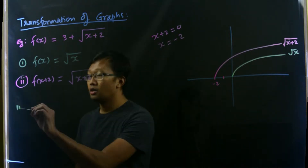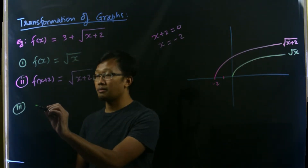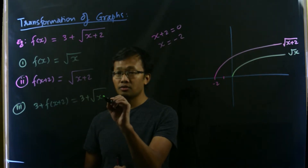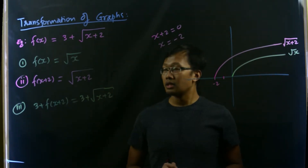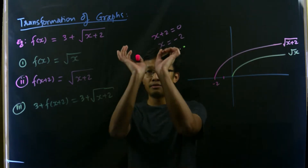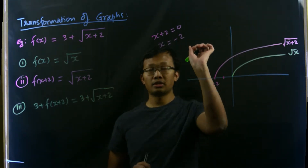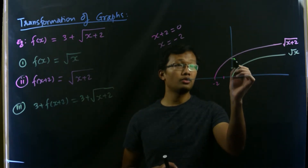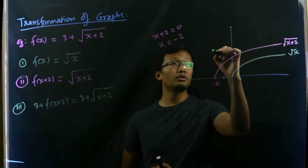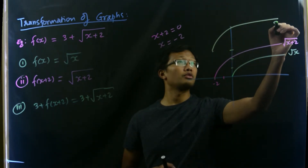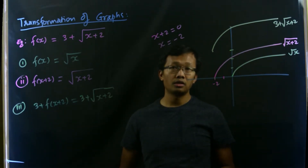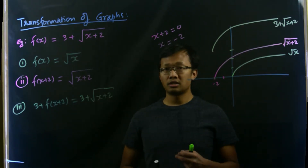Now we add 3 to the entire function, so that gives us 3 plus f(x+2), which changes into 3 plus root of x plus 2. Since we added a constant to the entire function, the shifting will be done vertically upwards or downwards. This is positive, so we shift 3 units upward. The points on the graph move up accordingly, and our function looks like 3 plus root of x plus 2. This is how we do transformation using the parent function with stepwise shifting.